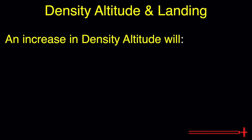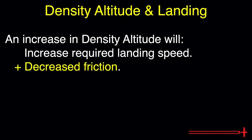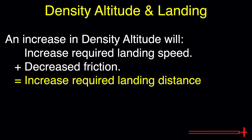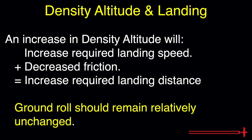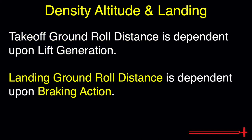Up next is landing distance. An increase in density altitude will result in a higher required landing speed coupled with less friction to slow the aircraft down, which increases the landing distance. However, the landing ground roll should remain relatively unchanged by fluctuations in density altitude. This is because takeoff ground roll distance is dependent primarily upon lift generation, while the ground roll during landing is dependent upon braking action, which should remain mostly unaffected by density altitude.